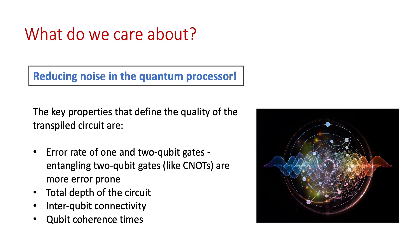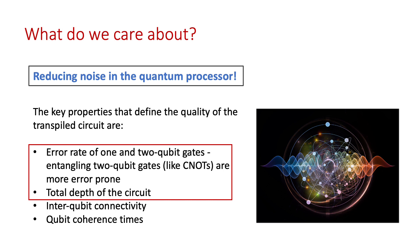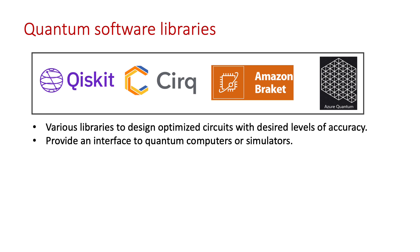The key properties defining circuit quality are the error rate of one and two qubit gates — where two qubit entangling gates like CNOT gates are much more error prone — and the total depth of the circuit, where the shortest possible sequence leads to fewer measurement errors, along with inter-qubit connectivity and qubit coherence times. In this package, the two primary objectives are minimizing the two qubit CNOT gates and the depth of the circuit. There are already numerous software libraries by IBM, Google, Amazon, and Microsoft that automate converting quantum designer needs into optimized circuits.